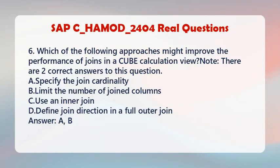Question 6: Which of the following approaches might improve the performance of joins in a cube calculation view? Note: There are two correct answers to this question. A. Specify the join cardinality. B. Limit the number of joined columns. C. Use an inner join. D. Define join direction in a full outer join. Answer: A, B.